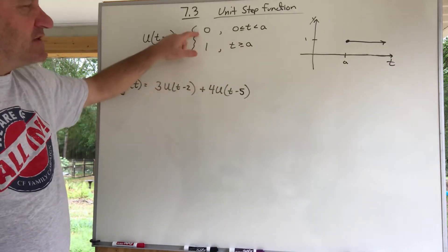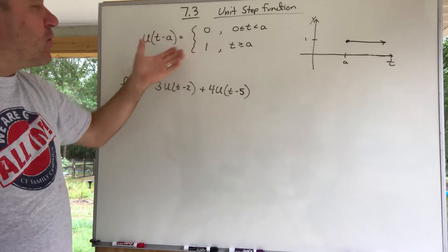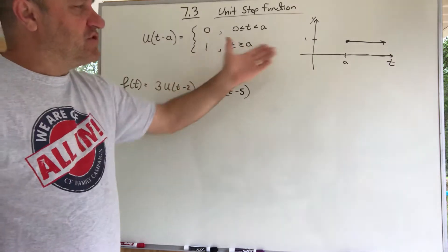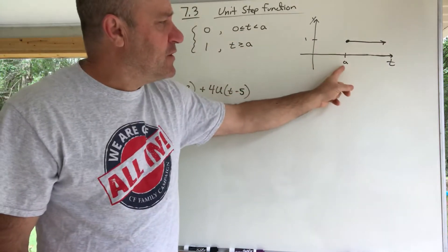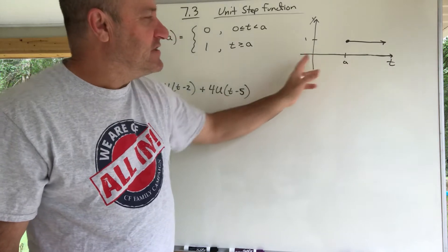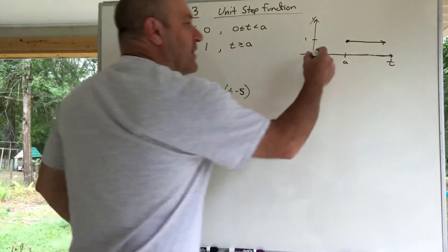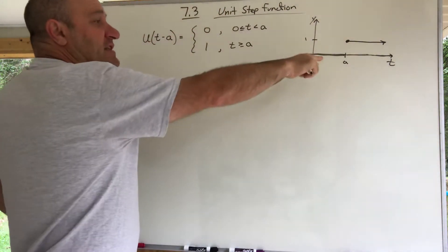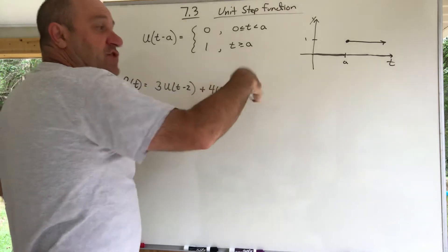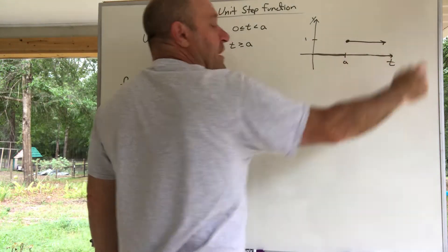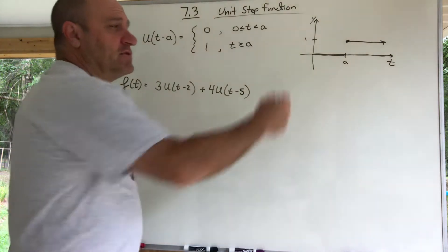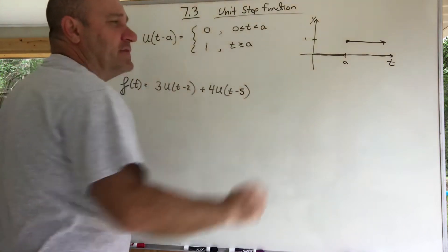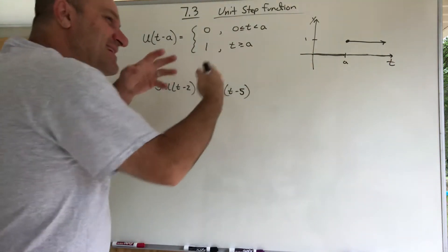I like to think of that as off and on — a zero or a one. Here's a picture of it: while t is less than a, it's a zero. It stays zero until it gets to a, and once it reaches a it turns on and becomes a one. It's fairly simple — until you start using it.